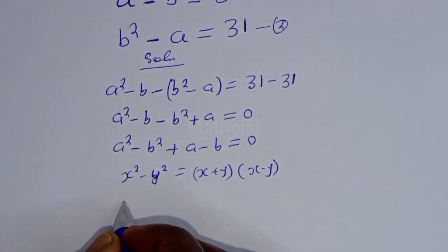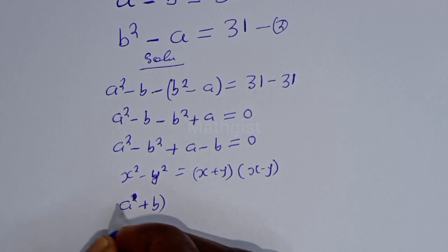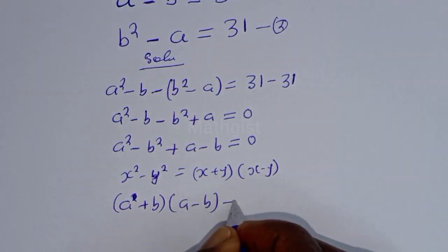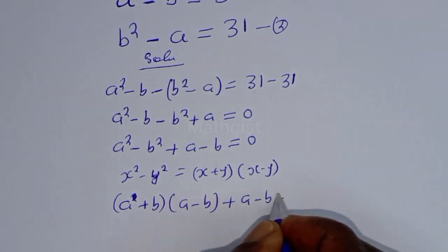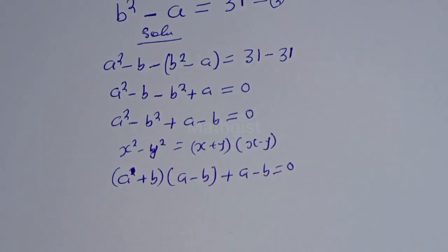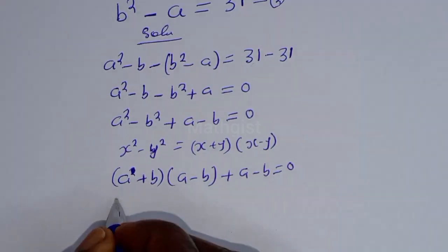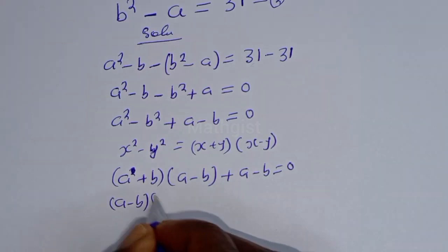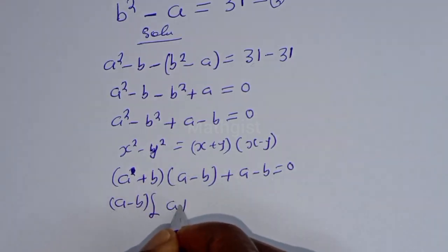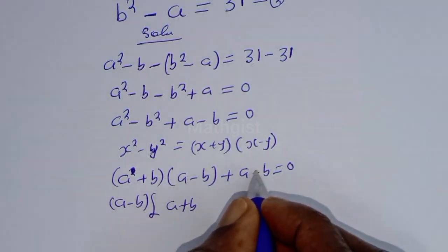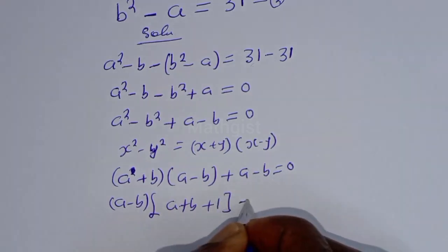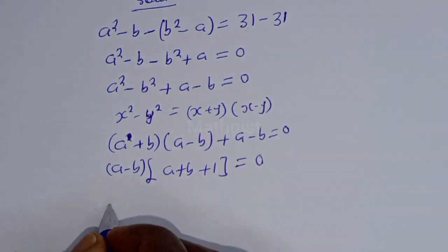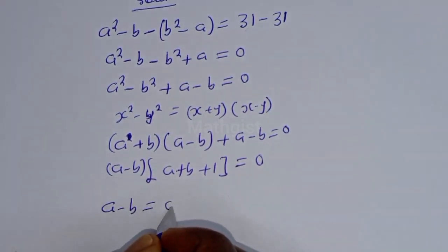Then this can be written as (a + b)(a - b) + (a - b) = 0. From here, (a - b) is common, so we factor it out: (a - b)(a + b + 1) = 0. There are two cases: the first case is a - b = 0, and the second case is a + b + 1 = 0.